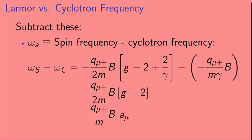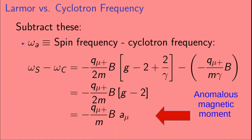Let's define a new quantity: omega a. It's the difference between the spin frequency omega s and the cyclotron frequency omega c. The cyclotron frequency cancels out the 2 over gamma term in the spin frequency, making omega a proportional to g minus 2. And since the anomalous magnetic moment a mu is just g minus 2 divided by 2, omega a is directly proportional to the anomalous magnetic moment.